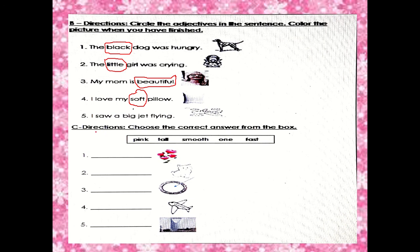Question number five: I saw a big jet flying. I saw a big jet flying. Our answer is big. So the next activity — you will also write the adjective. Choose the correct answer from the box.